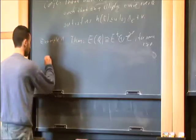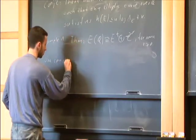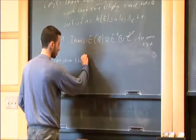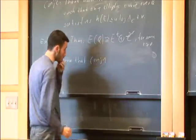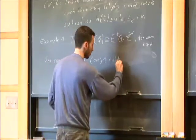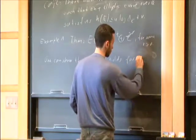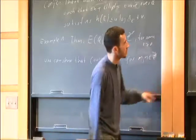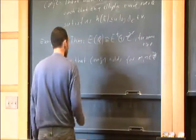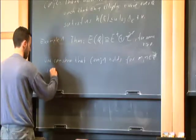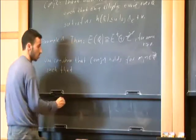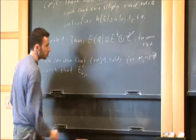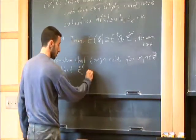One can show that Conjecture 1 holds for integers m, n which satisfy the non-zero condition, and such that the torsion group of the associated elliptic curve E_mn is non-trivial.